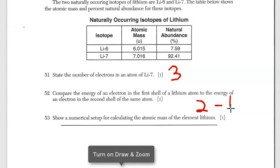Finally for question 53, showing a numerical setup for calculating the atomic mass of the element Lithium. You are going to see an atomic mass question somewhere when you take your Regents exam. It always comes up. The masses on the periodic table are known as the weighted average of the naturally occurring isotopes. In this case, Lithium has two isotopes, Lithium-6 and Lithium-7.